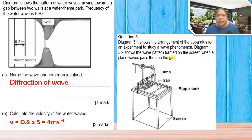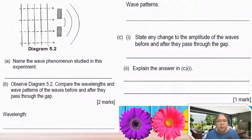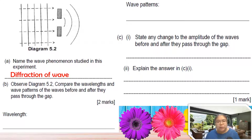Number five: diagram 5.1 shows the arrangement for an experiment to study wave phenomena. Diagram 5.2 shows the wave pattern formed on a screen when a plane wave passes through a gap - it becomes circular after passing through. Name the phenomena: diffraction of the wave. Observe 5.2 and compare the wavelength and wave pattern before and after passing through the gate. Wavelength before and after: unchanged.